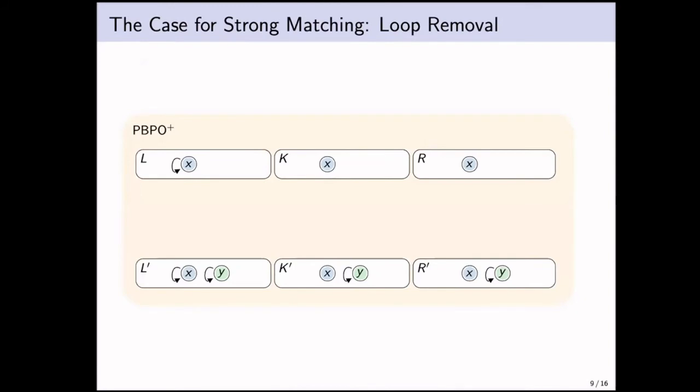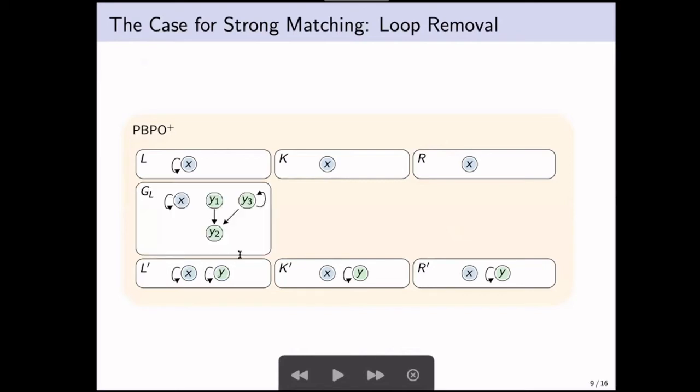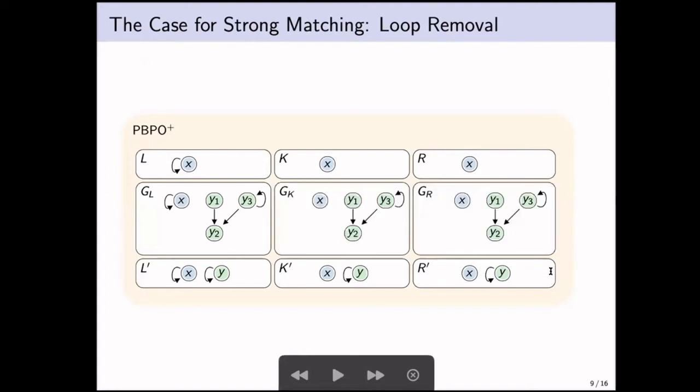Why would you intuitively want to use strong matching? First example is loop removal. We will try to find just an isolated node with a single loop disconnected from the rest of the context. Here is a host graph that has a strong match. And then we just delete the loop on this occurrence that we found. And the rest we leave intact. So we do the pullback, the pushout, and this is the result.